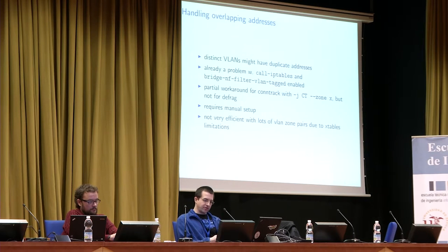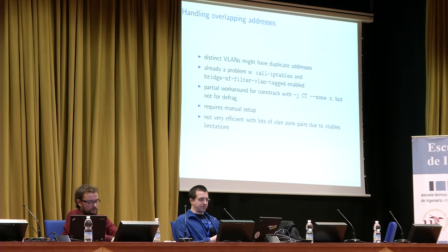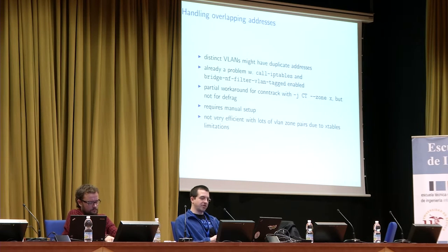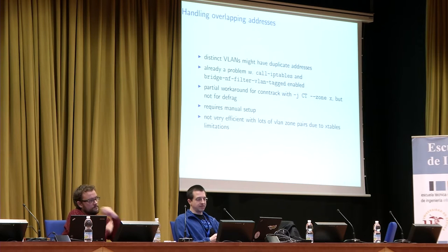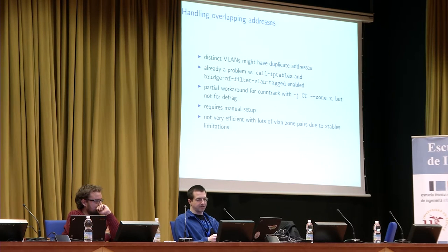Next problem: overlapping addresses. Originally I thought we might be able to solve this automatically, but it turns out it's not easy to resolve. We can partially work around it in IP tables with the conntrack target by stuffing connections with overlapping addresses into distinct zones. A zone is basically a 16-bit identifier used as an additional key during conntrack lookups, so even if the on-wire addresses are the same, a lookup would no longer find the conflicting tuple. However, it requires manual setup and is not very efficient when you have lots of VLANs, because IP tables has linear evaluation — so if you have 1,000 VLANs and want to stuff them into 1,000 distinct zones, you need 1,000 rules.